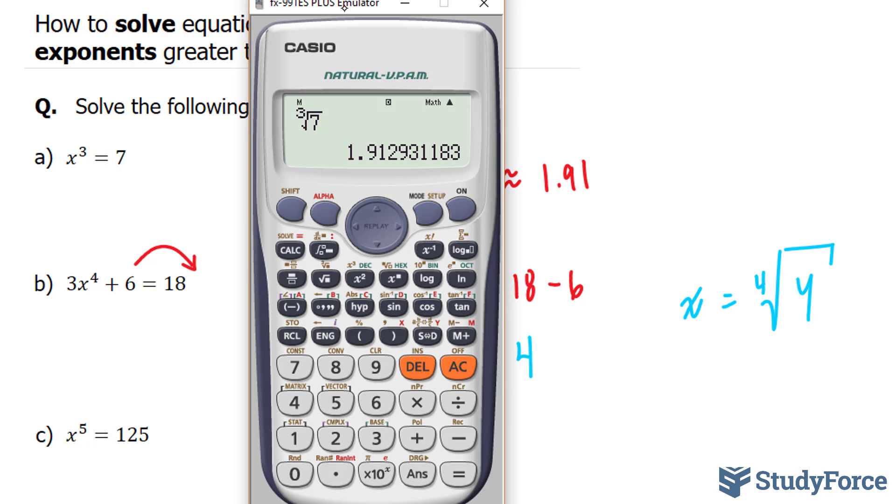Once again, shift this button. Try to find it on your calculator. The fourth root of 4 gives us 1.41.